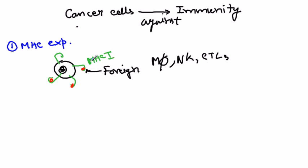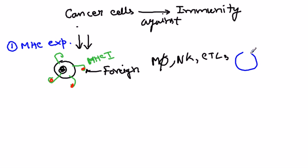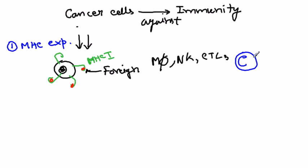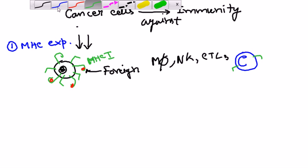Cancer cells go against this process with a simple strategy: they decrease the expression of MHC class 1. By minimizing MHC formation on the surface, no other cells can detect their presence. The cancerous cell minimizes MHC expression outside, so very few MHC molecules appear on its surface, compared to normal cells which display many MHC molecules. This is the first type of modification.